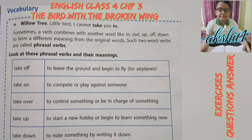The willow tree says, 'I cannot take you in.' Sometimes a verb combines with another word like in, out, up, off, or down to form a different meaning from the original word. Such two-word verbs are called phrasal verbs. Look at these phrasal verbs and their meanings. Take off: to leave the ground and begin to fly, for airplanes.